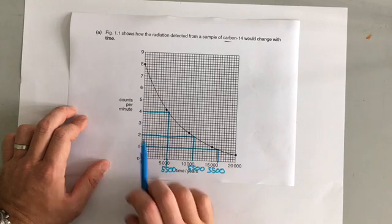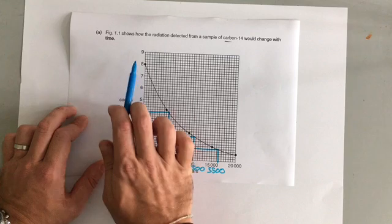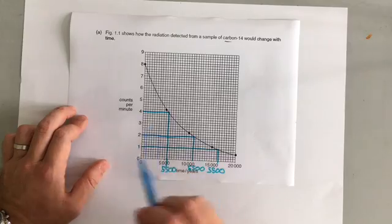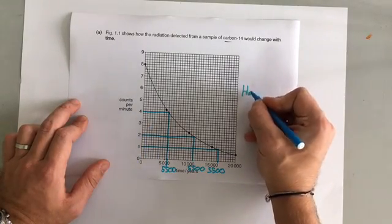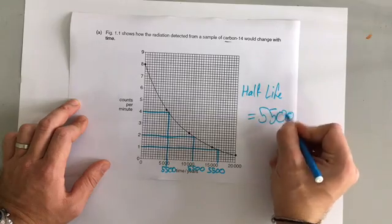So every 5,500 years, the number of radioactive particles emitted, the amount of radiation emitted, is decreasing by half every 5,500 years. So the half-life of carbon-14 from this graph is 5,500 years.